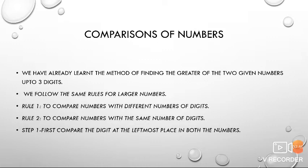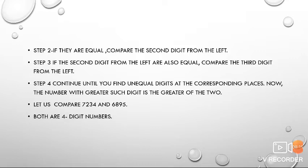Comparison of numbers: we have already learned the method of finding the greater of two given numbers up to 3 digits, and we follow the same rule for larger numbers. Rule 1: to compare numbers with different numbers of digits. Rule 2: to compare numbers with the same number of digits — Step 1: compare the digit at the leftmost place in both numbers; Step 2: if they are equal, compare the second digit from the left; Step 3: if those are also equal, compare the third digit; Step 4: continue until you find an unequal digit. The number with the greater such digit is the greater of the two.